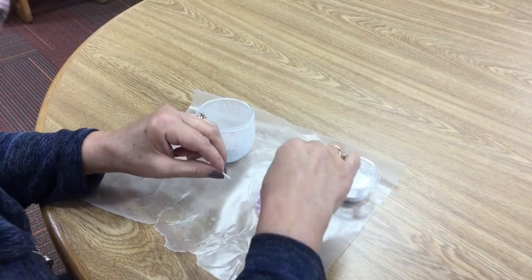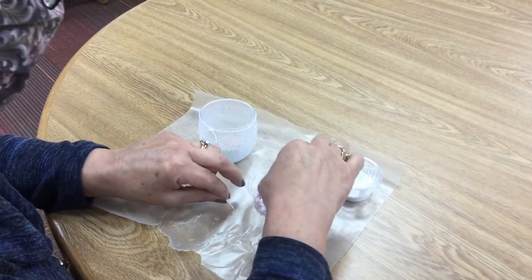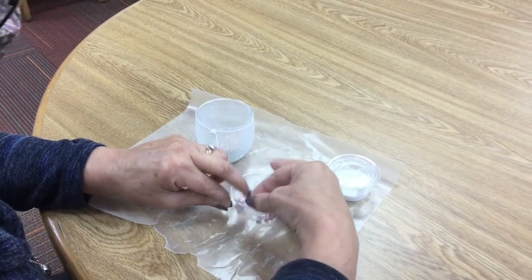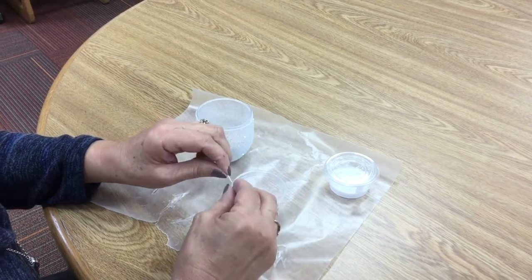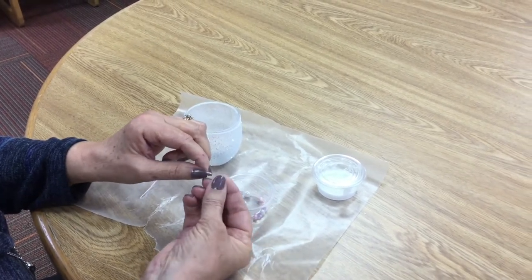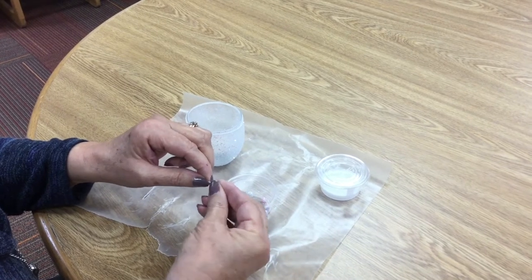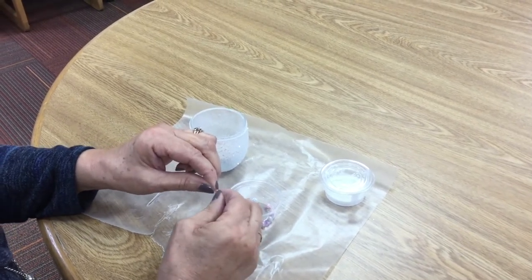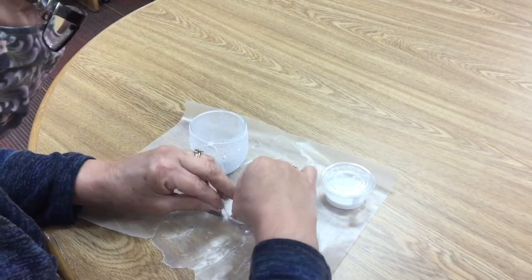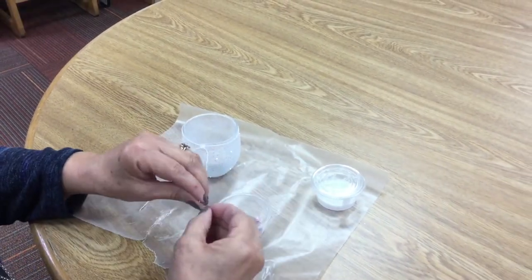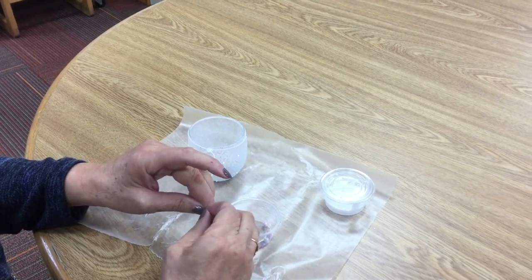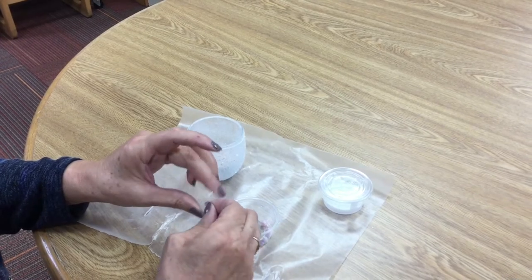We put some Mod Podge on the end of these to help secure the end. If it starts fraying, cut it and put some glue on it, let it dry, and then you'll be able to feed it through real well. You can put as many beads on there as you like or whatever colors you want—you have plenty of beads to do that.